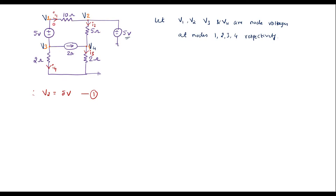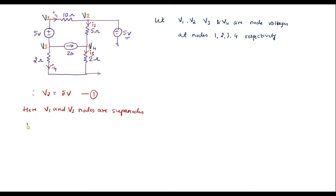We can also observe that between node V1 and V3, a voltage source of 5 volts is directly connected. If a voltage source is directly connected between two nodes, those two nodes are known as super nodes. So here V1 and V3 nodes are super nodes. The positive terminal is connected to V1 and the negative terminal is connected to V3. So I can write V1 minus V3 is equal to 5 volts. Call it equation 2.